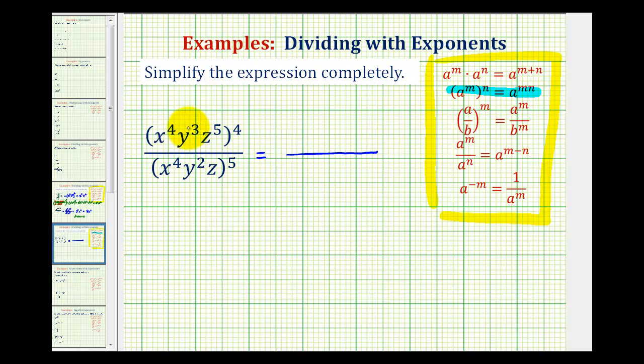we will multiply each exponent inside the parenthesis by four. We'd have x to the power of four times four, which is 16, y to the power of three times four, which is y to the twelfth, and z to the power of five times four, which would be z to the twentieth.